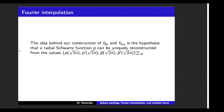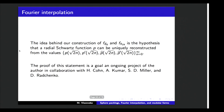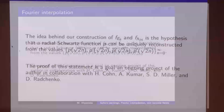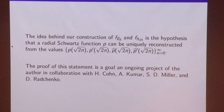As I already told you, the idea behind our construction of the special functions F_e8 and F_lambda24 is the idea that the radial Schwarz function can be reconstructed from this collection of its values and the values of its Fourier transform. We have many confirmations that such a formula indeed exists, but the complete proof of it is still an ongoing project.